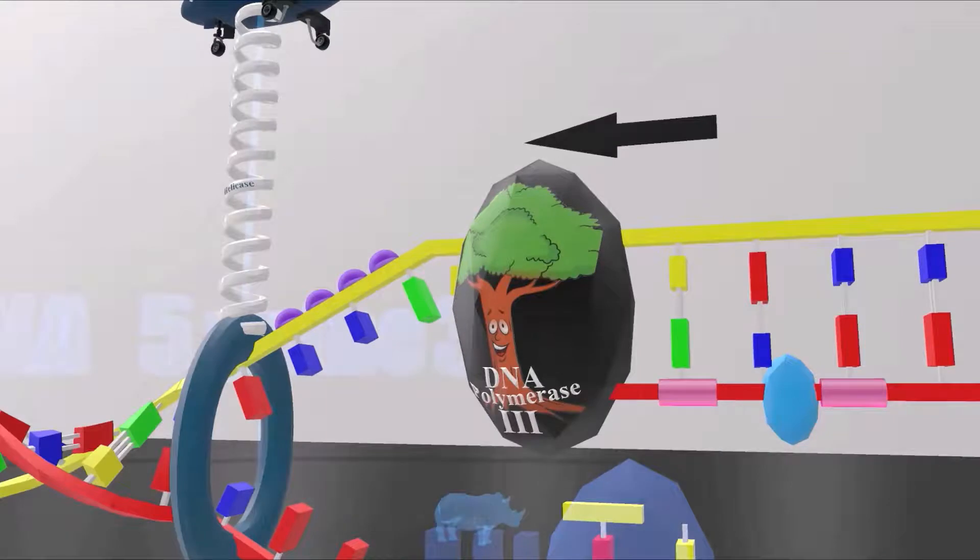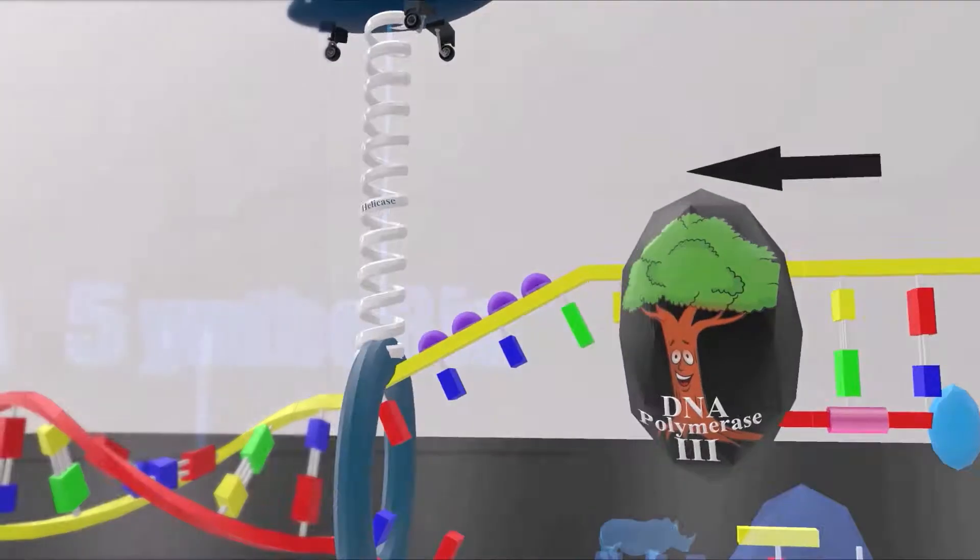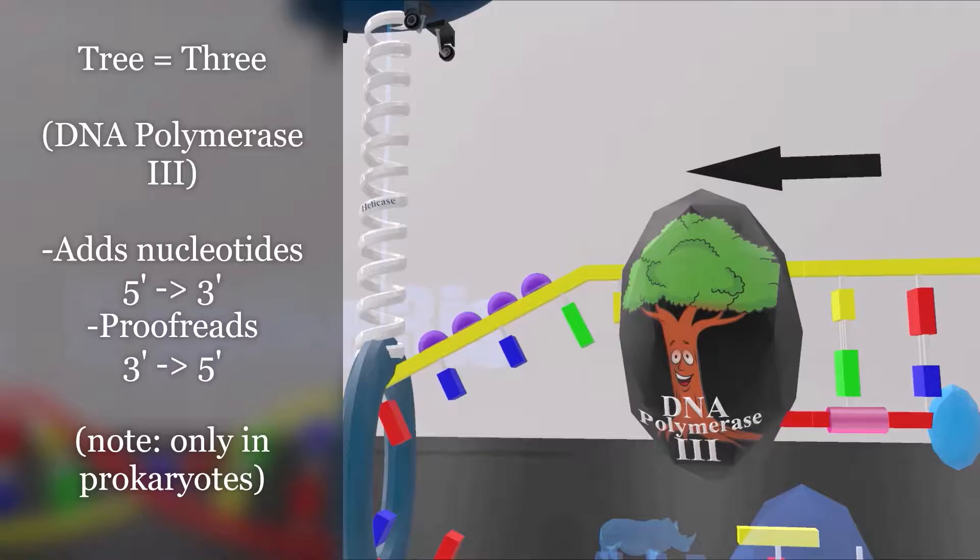Here we see DNA polymerase III. I know that he's 3 because I see the tree. Tree reminds me of 3. So this is DNA polymerase III. As I mentioned at the beginning, DNA polymerase III adds nucleotides in the 5' to 3' direction.